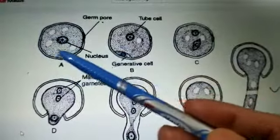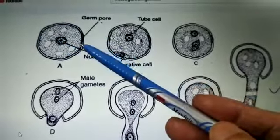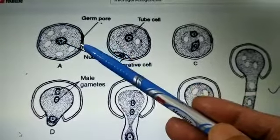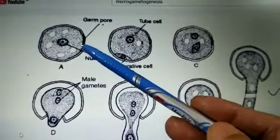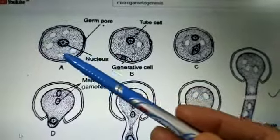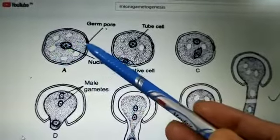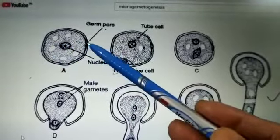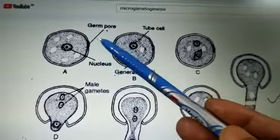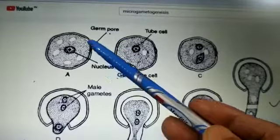This first diagram shows the structure of a pollen grain. It consists of a nucleus and two walls — the outer wall is called exine, the inner wall is called intine. It also has cytoplasm and some vacuoles are present.